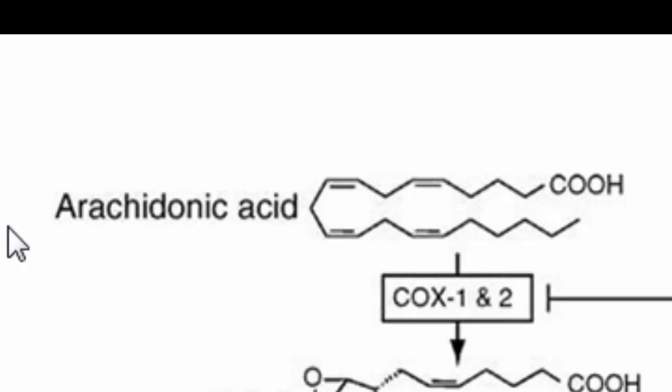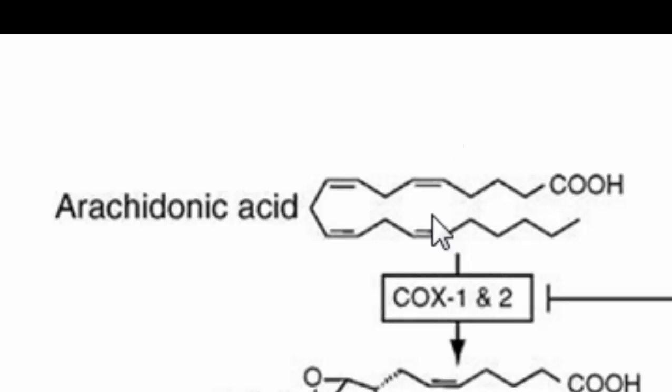Why is it called an omega-6 fatty acid? Counting from the omega end: 1, 2, 3, 4, 5, 6 — at the 6th position there is a double bond. That is why these are called omega-6 fatty acids. Arachidonic acid contains 4 double bonds, so it is also called icosatetraenoic acid. Icosa means 20 carbons, tetra means 4, enoic means 4 double bonds, and acid refers to the carboxylic acid functional group.